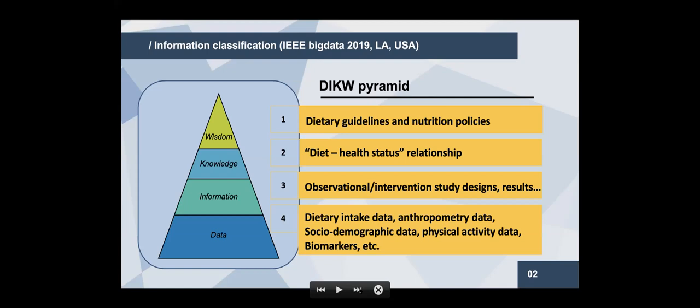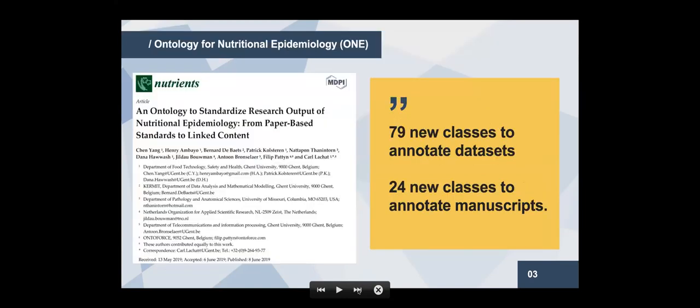After classifying the information, we decided to make an ontology for a computer to process information in nutritional epidemiology, to promote data sharing and reuse in this field. In 2019, we created an ontology to standardize the research output of nutritional epidemiology — from paper-based standards to linked content. In the first version of the ontology, we introduced 79 new classes to annotate datasets and 24 new classes to annotate manuscripts.